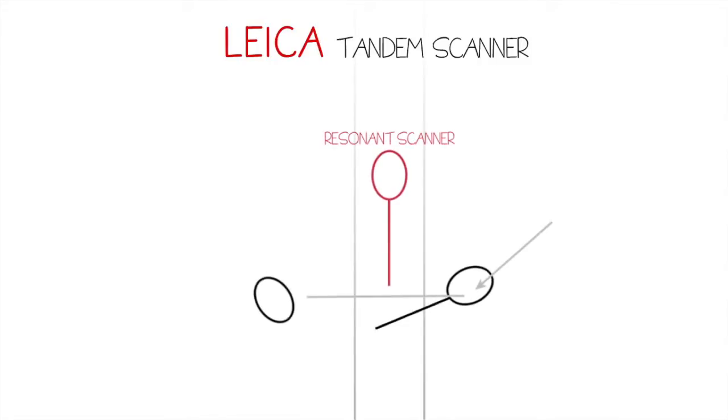Leica's Tandem Scanner eliminates the need for compromise by providing two scanners in one system. This allows you to optimize acquisition parameters based on your experimental needs.